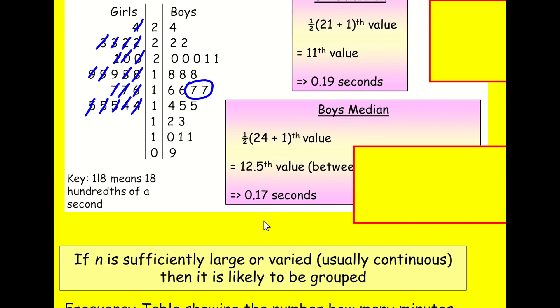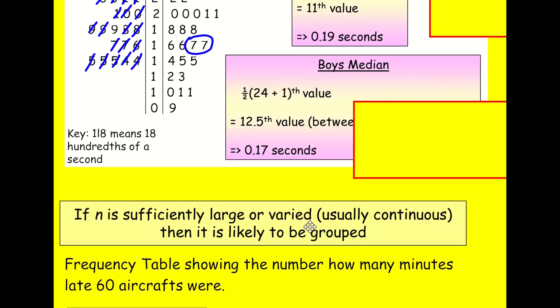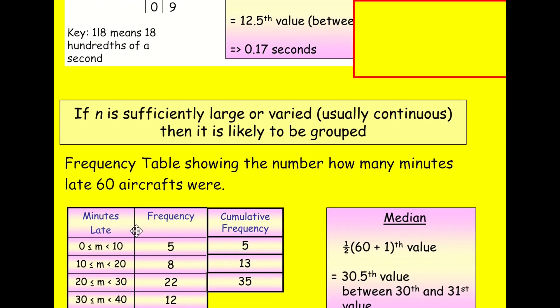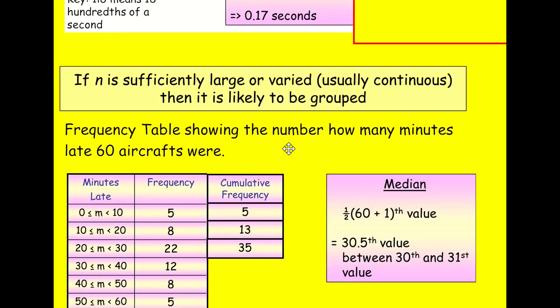Okay. If n is sufficiently large or varied, usually continuous, then it's likely to be grouped because you wouldn't, you know, for example, heights, there's lots of different values that you can have. If you work into the nearest centimeter, sometimes even more values. If you're doing, if you're doing sort of the weight of something and it might, it might vary, you might be able to measure it really accurately and you might get a whole host of different values,